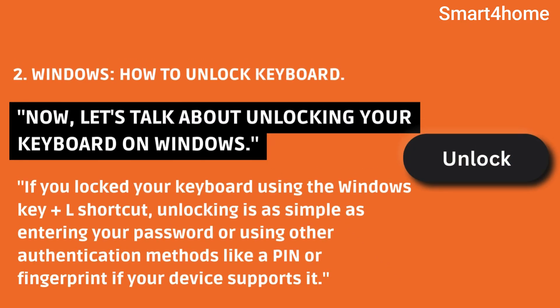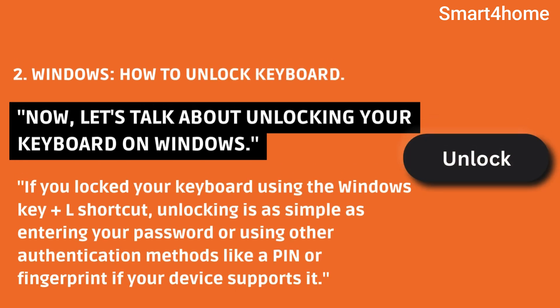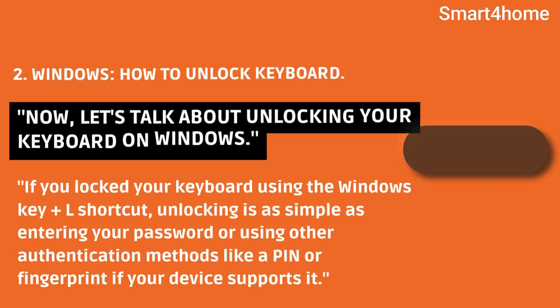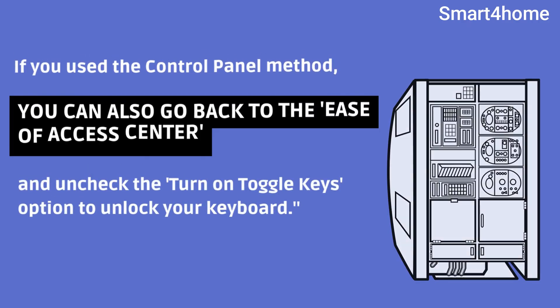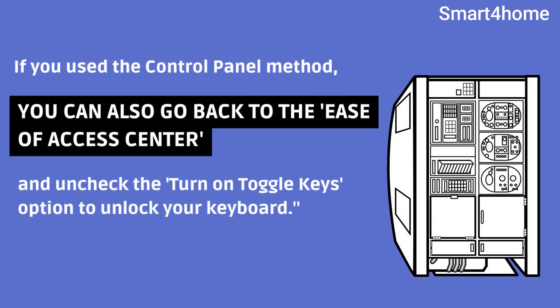Now let's talk about unlocking your keyboard on Windows. If you locked your keyboard using the Windows key L shortcut, unlocking is as simple as entering your password or using other authentication methods like a PIN or fingerprint if your device supports it. If you used the Control Panel method, you can also go back to the Ease of Access Center and uncheck the Turn on Toggle Keys option to unlock your keyboard.